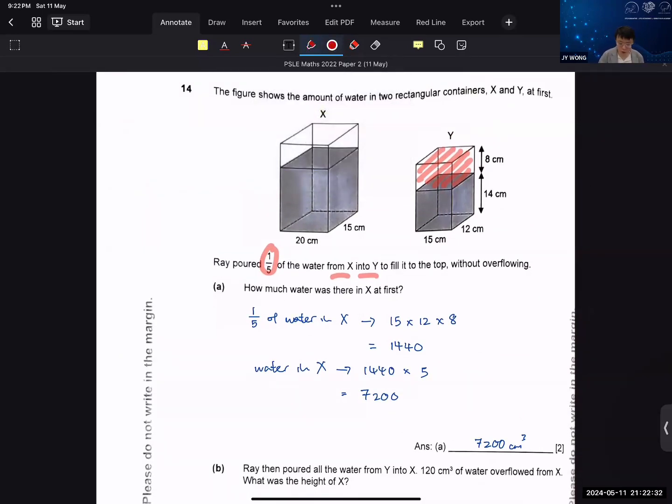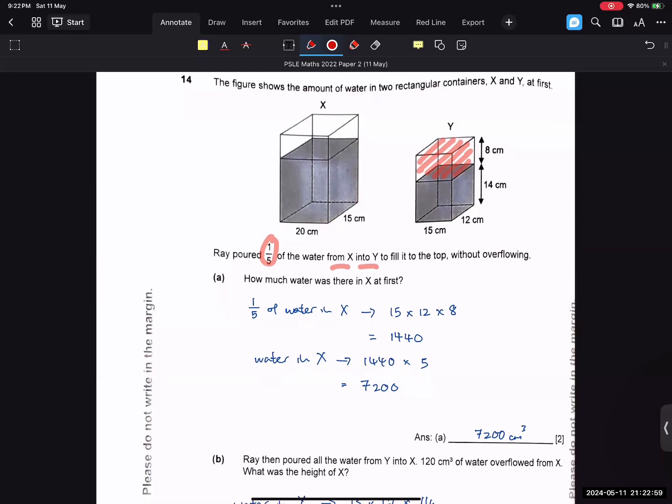If I pour from container X to Y, what kind of transfer is that? It's an internal transfer, right? So the total amount of water stays the same. How you want to find the total amount of water doesn't matter. If you find 12 times 15 times 22, then you are finding four out of five of the water in X. Wait, does the amount change? Because it said 120 of the water overflow. I have not reached that part yet. Oh, I thought you had.